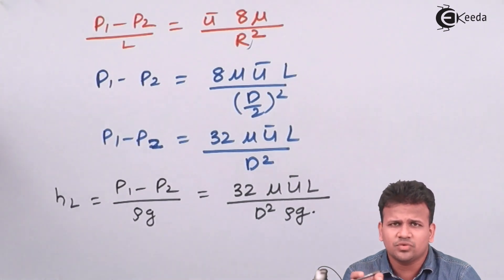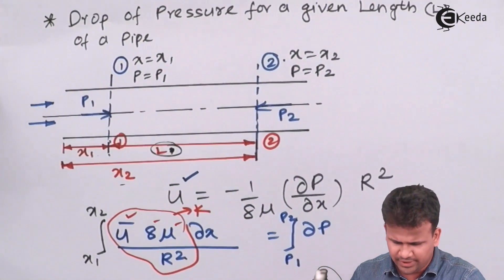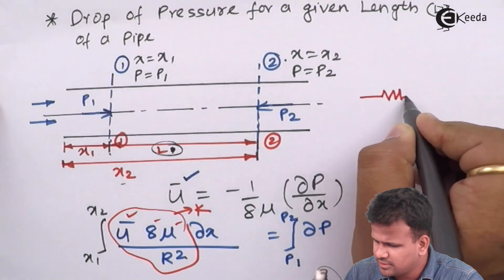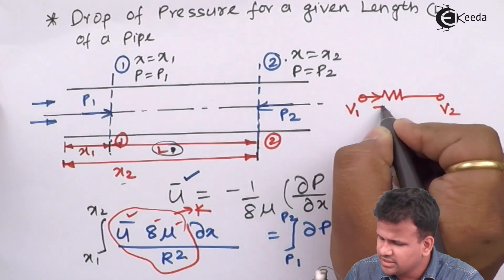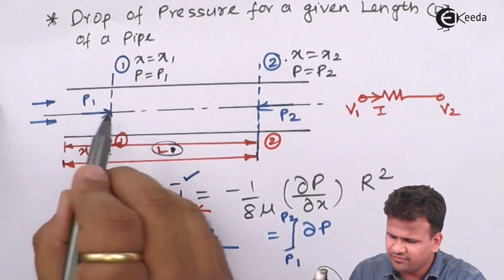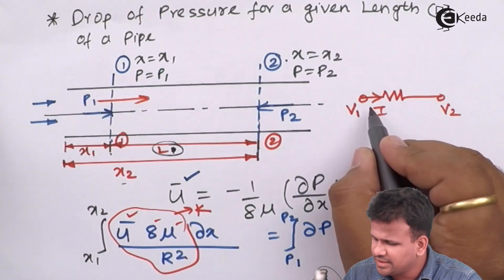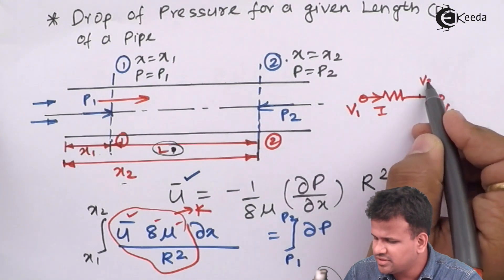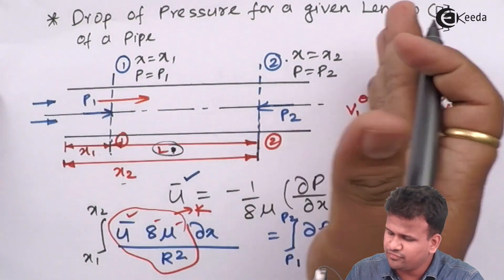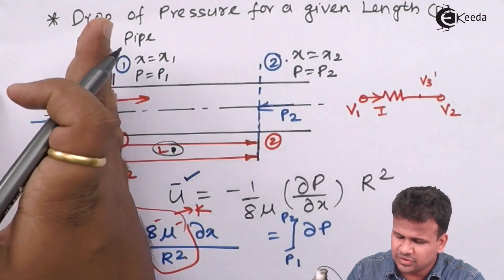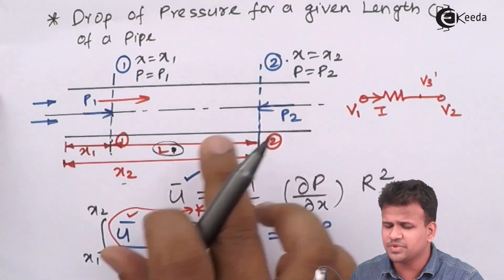As we go from the left-hand side towards the right-hand side, the pressure is going to decrease. This is similar to a wire conducting an electrical current — if we have potentials v1 and v2, current flows from higher potential to lower potential. Similarly, if there is a pressure drop, the fluid flows from the higher pressure end to the lower pressure end. As it goes from p1 to p2, the pressure reduces. The larger the pressure difference, the larger the flow of fluid.